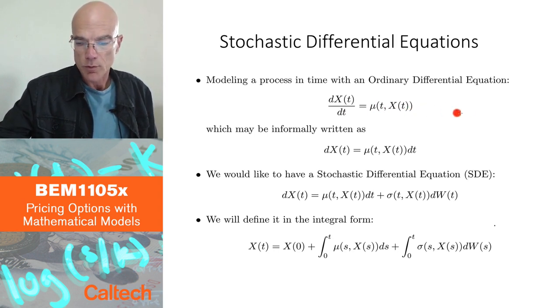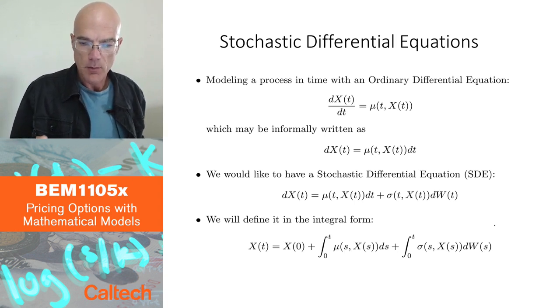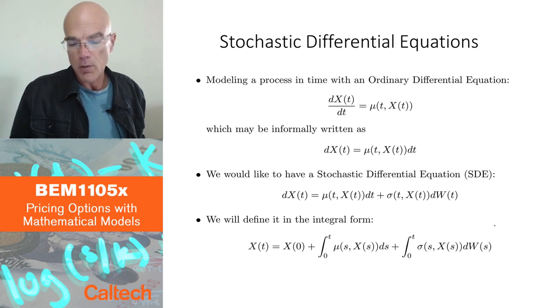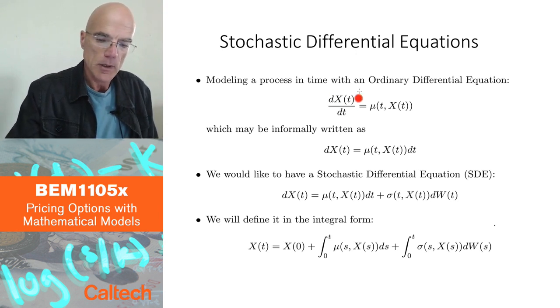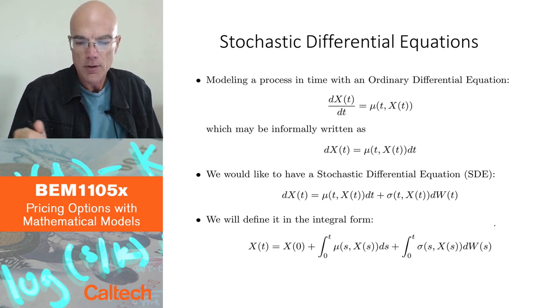What we want to do here is we want to model a random system, a random process, and we want to add a Brownian motion, a random component to this ordinary differential equation. The problem is, as we mentioned in the last set of slides, Brownian motion does not have derivative with respect to time. It's not differentiable. So it's not going to be quite like this. We somehow have to build this model differently.